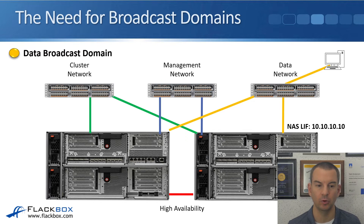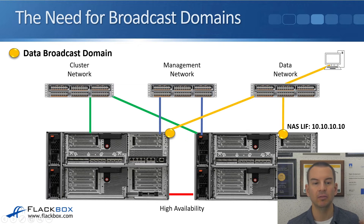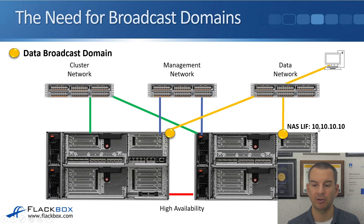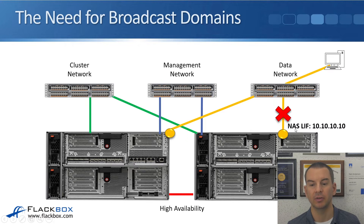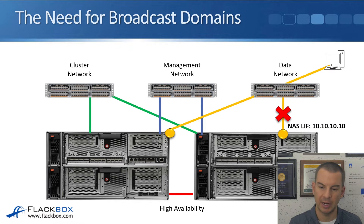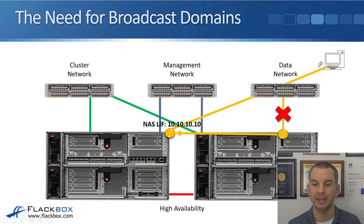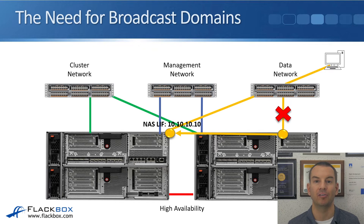Finally, we have a data broadcast domain — the two ports connected to the data network go into the data broadcast domain. Our NAS LIF with IP address 10.10.10.10, with client connectivity through the data network, is on one of those ports. If that port goes down, the LIF fails over to another port in the same broadcast domain. The client still has connectivity to that physical port, can still reach the IP address, and can still reach its data. That's why we create broadcast domains — to ensure a LIF always fails over to a port with the same connectivity.